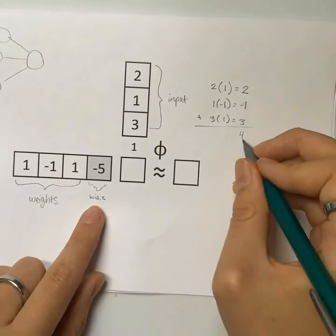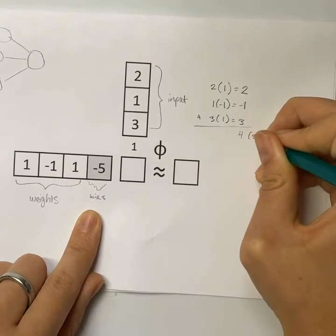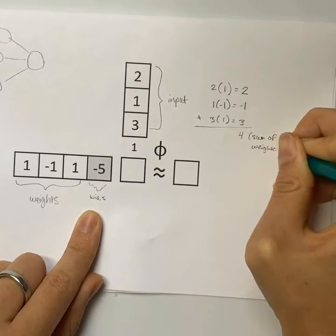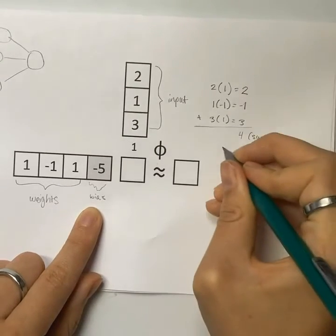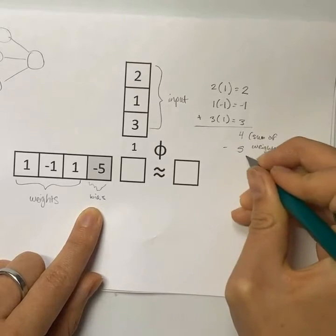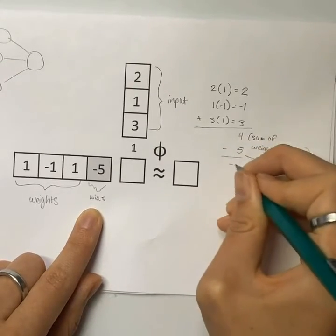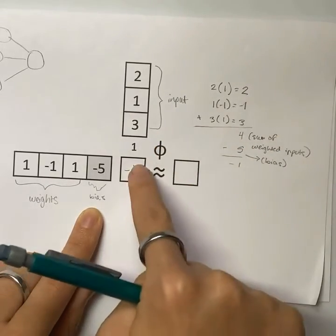Now we're going to take 4 which is the sum of weighted inputs and we're going to subtract the bias to get negative 1. This is the value that we have here.